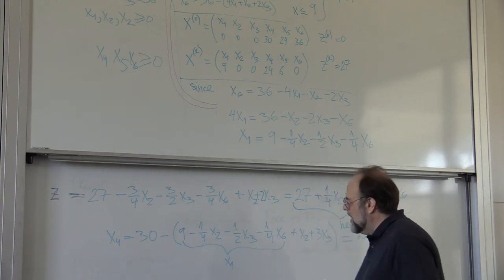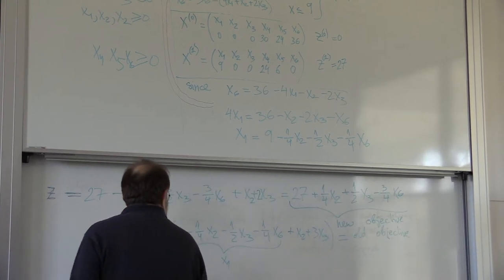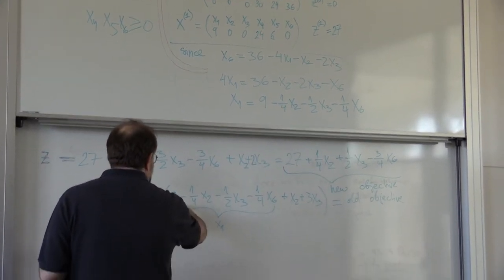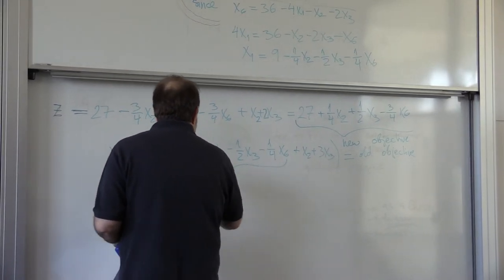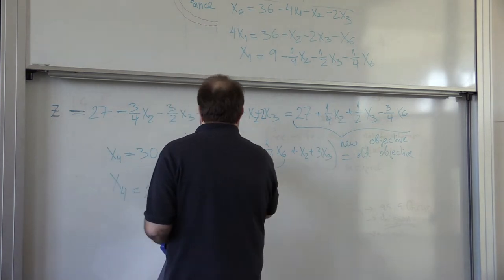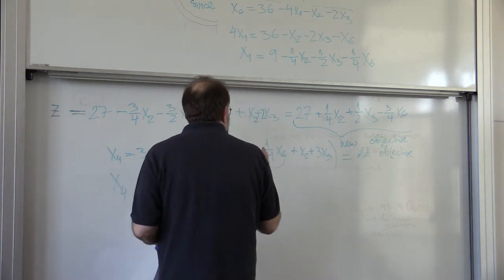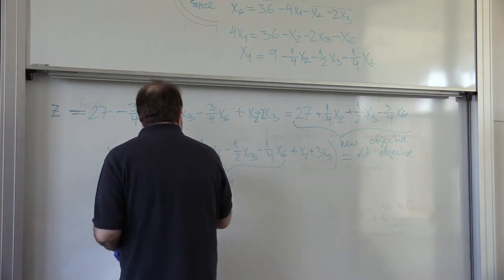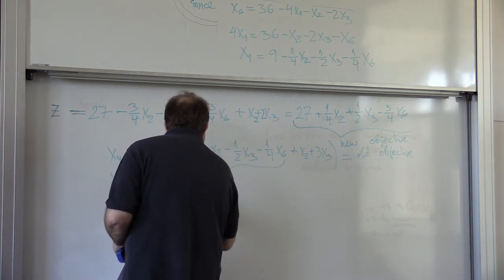For the 3x3, we can now simplify this into x4 equals 30 minus 9 is 21. Then we have minus 1 quarter x2 plus x2, this is plus 3 quarters, it becomes minus 3 quarters x2.